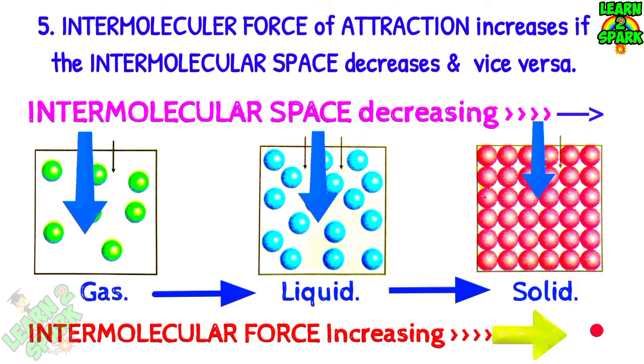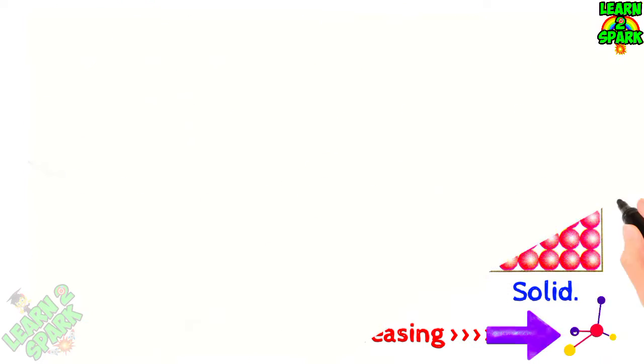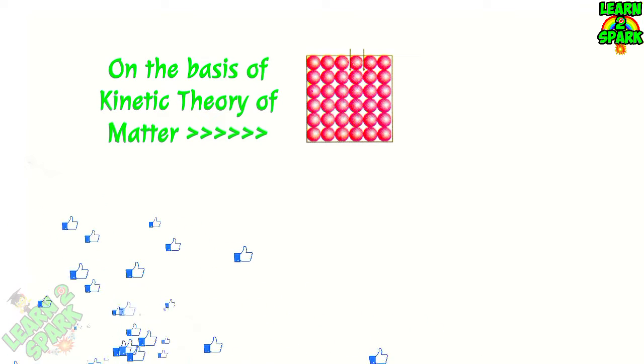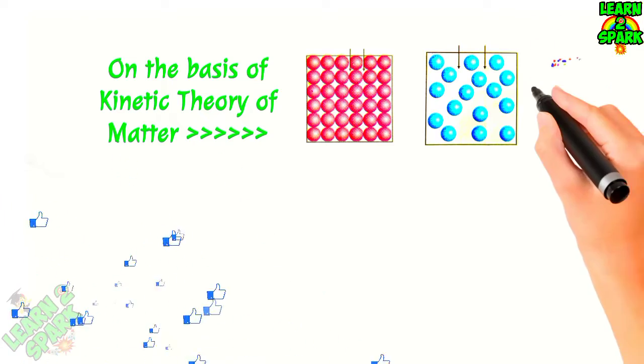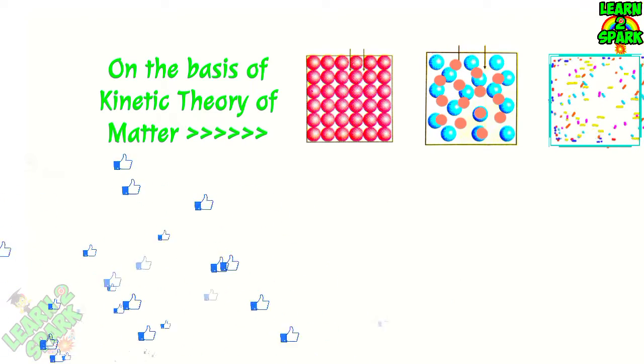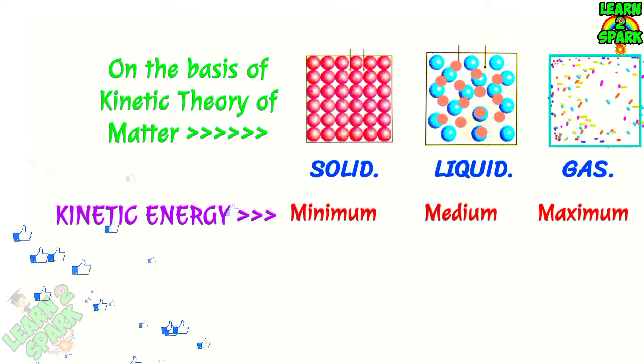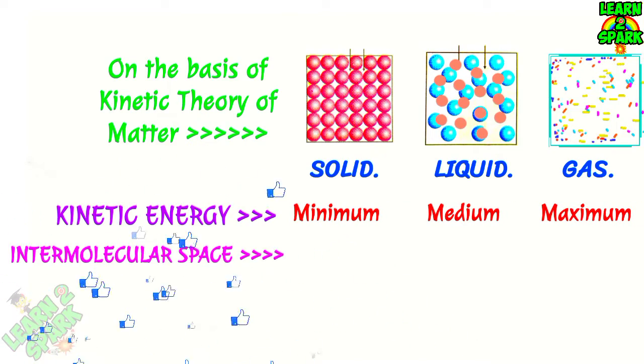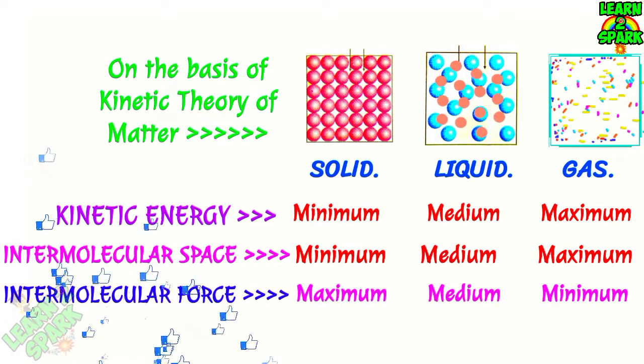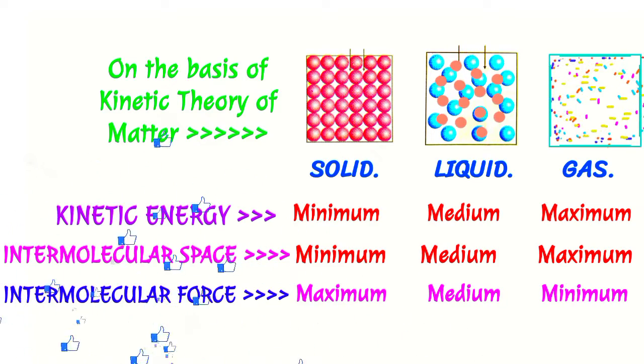Liquid has medium and solids have maximum intermolecular force of attraction. Finally, on the basis of kinetic molecular theory of matter, we are now able to understand the properties of solids, liquids, and gases. Let's compare their properties: kinetic energy is minimum in solid and maximum in gas. Intermolecular space is minimum in solid and maximum in gas. Intermolecular force of attraction is maximum in solid, medium in liquid, and minimum in gases.